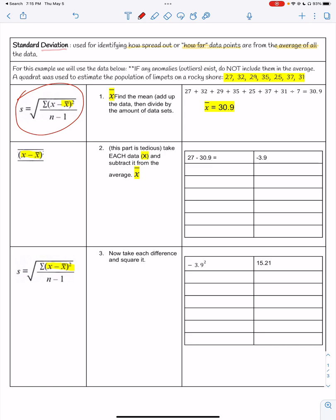The first step - you're going to need to find the mean or the average. For this example, I'm going to use this data below. If you have any anomalies or outliers in your data, something that's not following the norm, that may just be like a sampling error, anomalous error, maybe you reset something as you were counting or recorded something wrong - those can be eliminated to not include inside of this. The example is a quadrat was used to estimate the population of limpets on a rocky shore. I did post this to your Google classroom, this blank document, so you're able to fill it out.